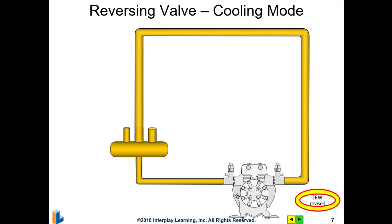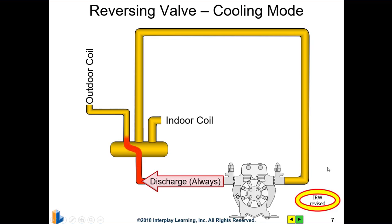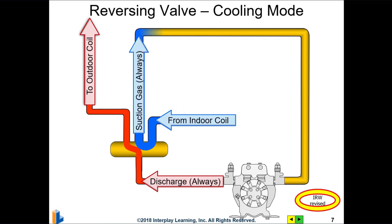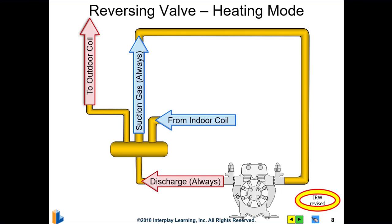The reversing valve in cooling mode takes the discharge gas through the permanent discharge port and sends it to the outdoor coil where it de-superheats, condenses, and sub-cools. The suction gas comes in from the indoor coil and goes back to the compressor. The valve may be energized into cooling mode or energized into heating mode — it depends on geographical location. In the northeast and other colder climates, some heat pumps have the four-way reversing valve that fails to the heat mode. In warmer climates like the south, many valves in those heat pumps are de-energized or fail to the cooling mode, meaning they have to energize the valve to get it to go to heating.